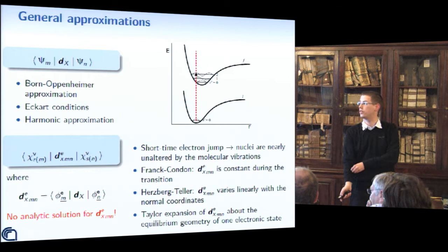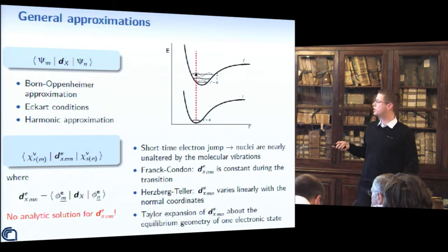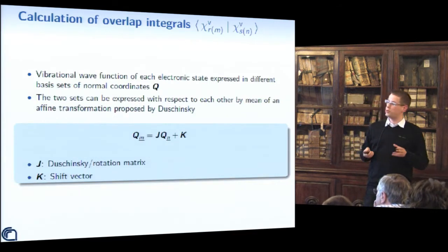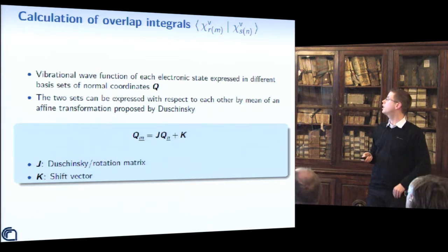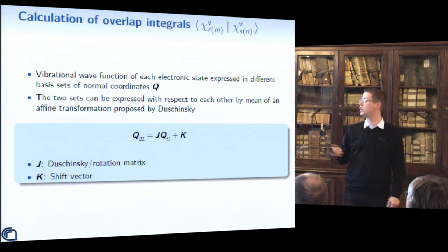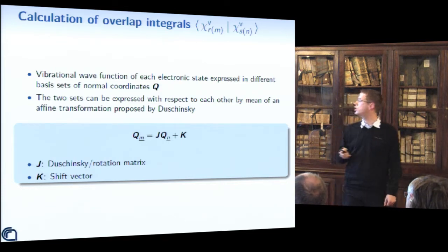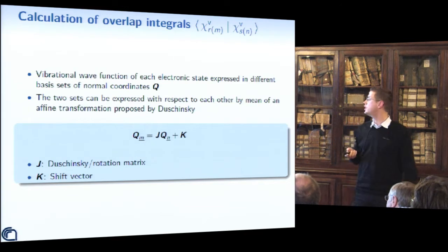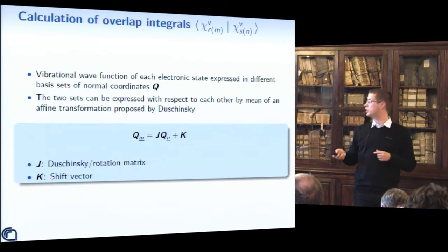Herzberg and Taylor proposed the first improvement by considering a linear variation with respect to the normal coordinates. These two terms are the first terms of a more general Taylor expansion of the property. We can then write the vibrational spectrum as a sum of overlap integrals between initial and final vibrational states weighted by the transition moment or its derivatives. Since wave functions are expressed in two different basis sets, we use the affine transformation proposed by Dushinsky to express the normal coordinates of one electronic state with respect to the other.